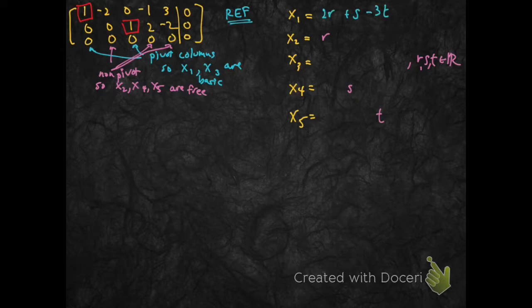And then the basic variables, I'm going to express in terms of numbers and free variables. So I see x1 is 2r plus s minus 3t, x3 is minus 2s plus 2t.